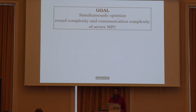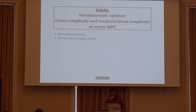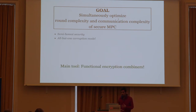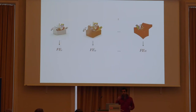The goal of this work is to simultaneously optimize both round complexity and communication complexity of secure MPC protocols. To keep things simple, I'm only going to focus on passive security and only work in the all-but-one corruption model. The main tool I'm going to use in this construction is that of function encryption combiners.